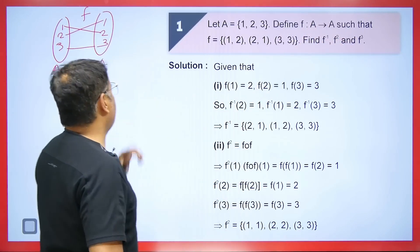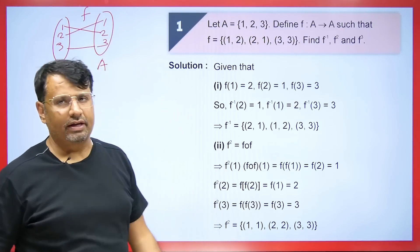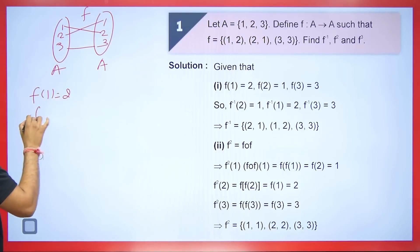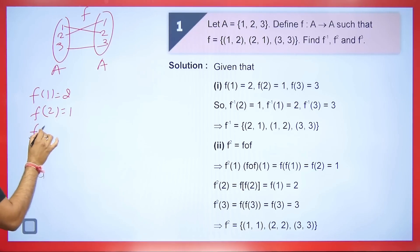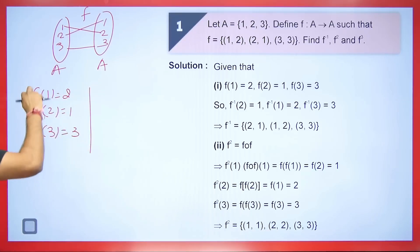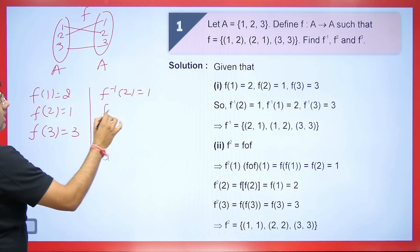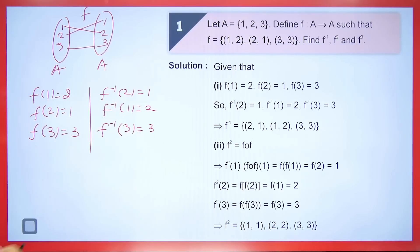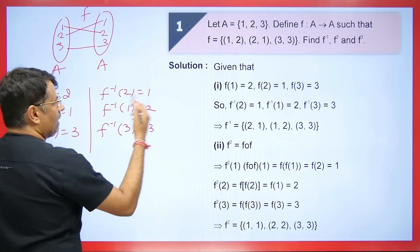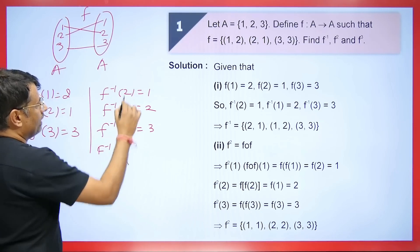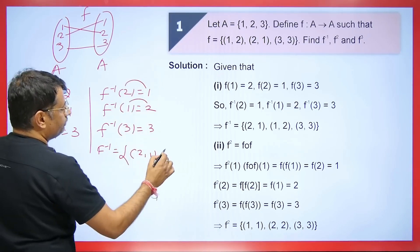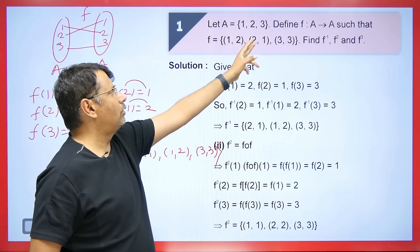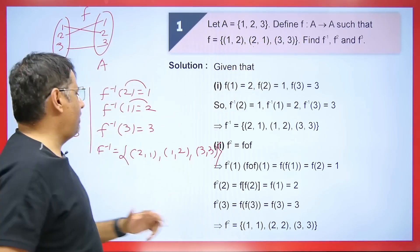If you have studied permutations, this is just a permutation concept. F(1) = 2, F(2) = 1, F(3) = 3. For the inverse, simply flip the mapping: F⁻¹(2) = 1, F⁻¹(1) = 2, F⁻¹(3) = 3. So F⁻¹ is written as: (1,2) → (2,1), (2,1) → (1,2), (3,3) → (3,3). All you need to do is reverse it.